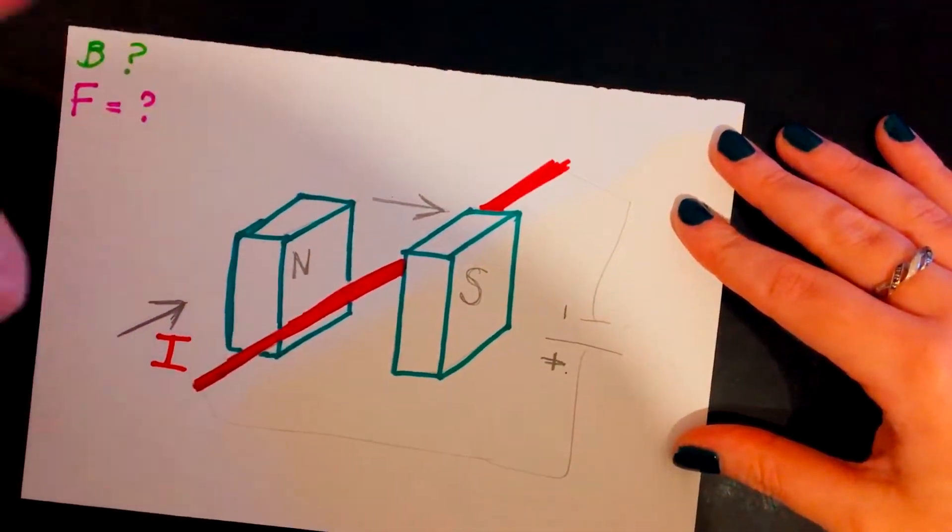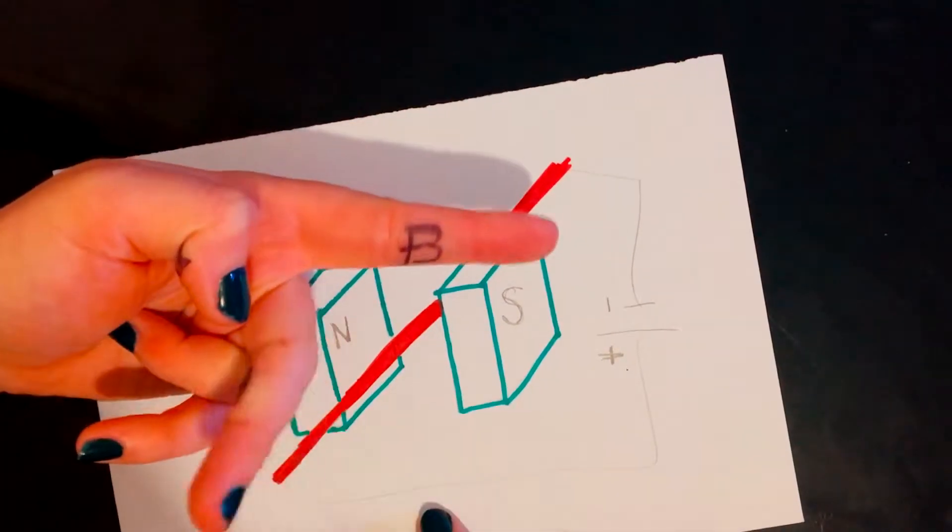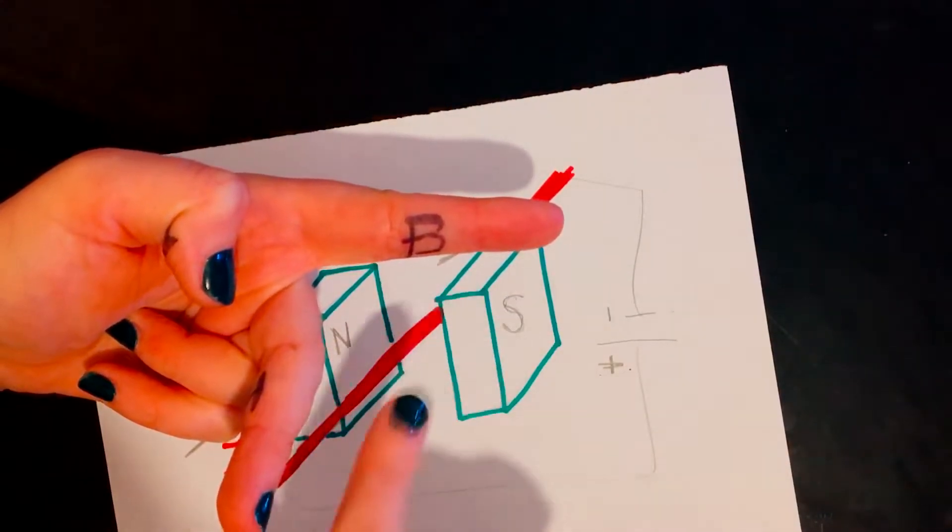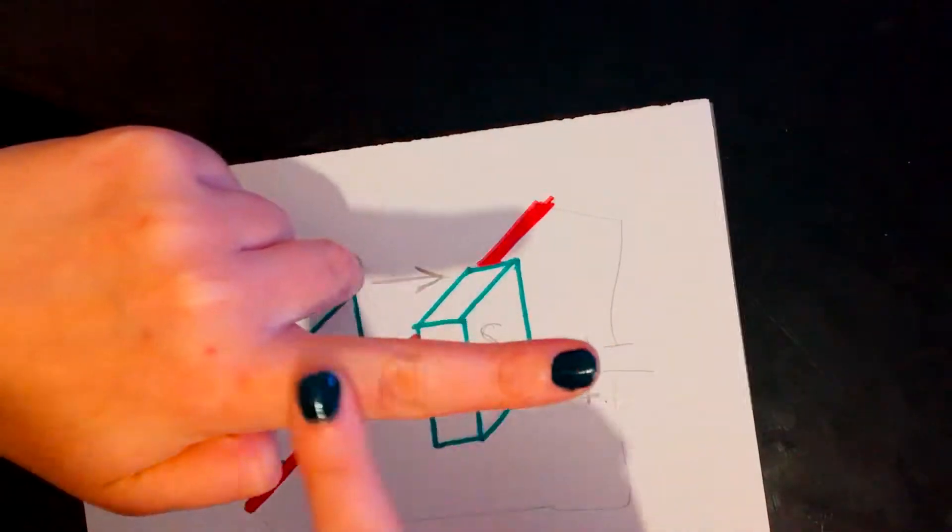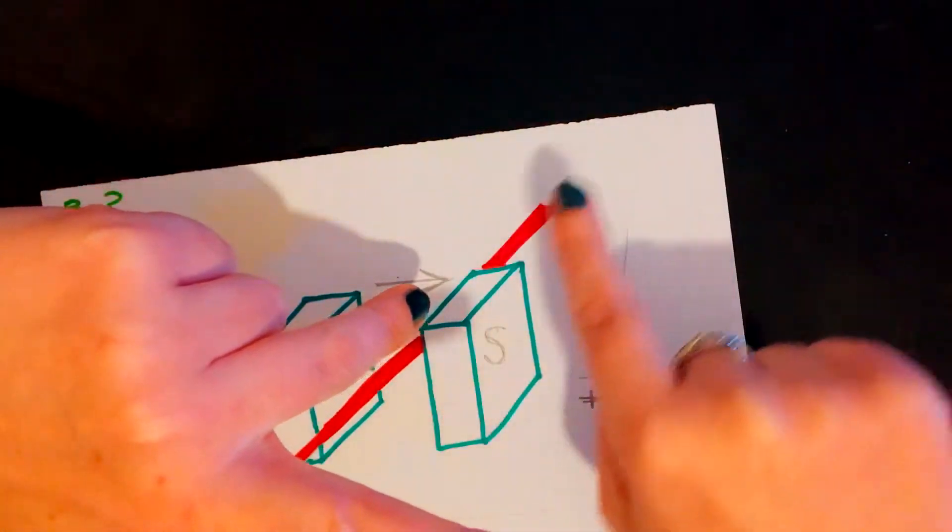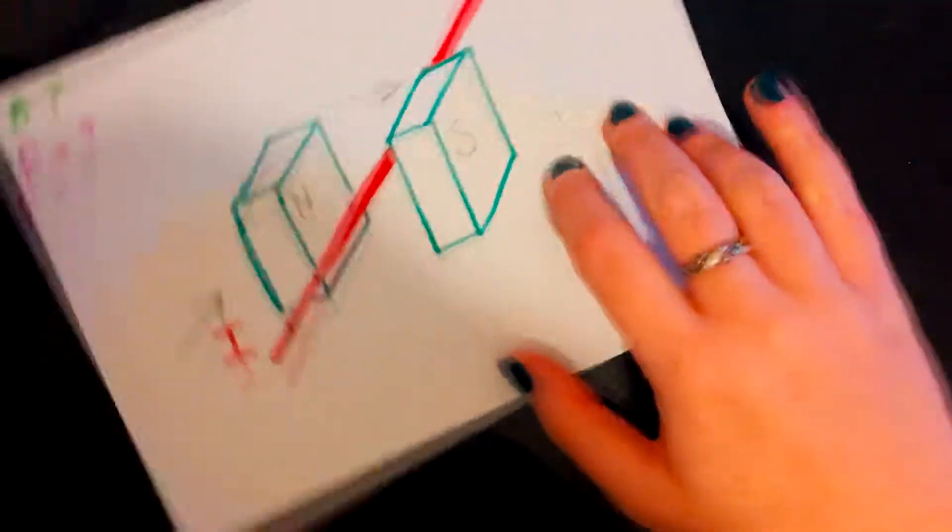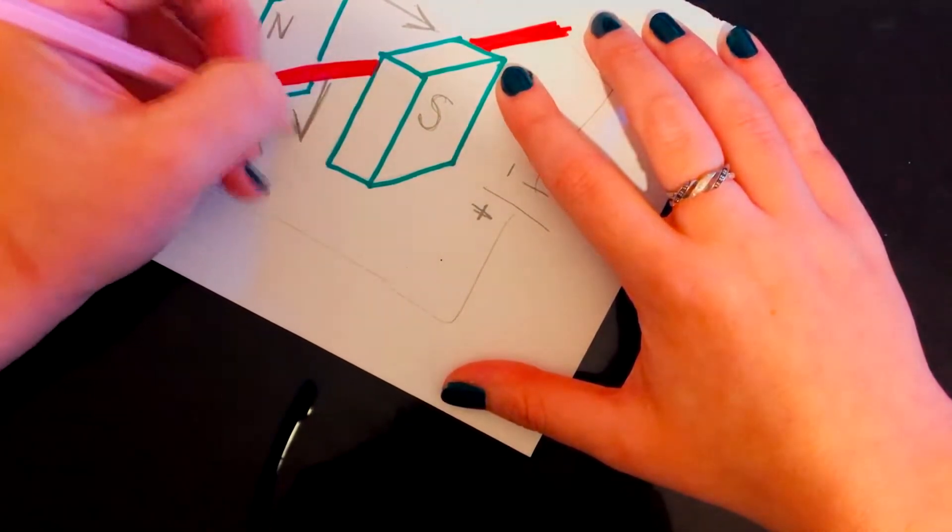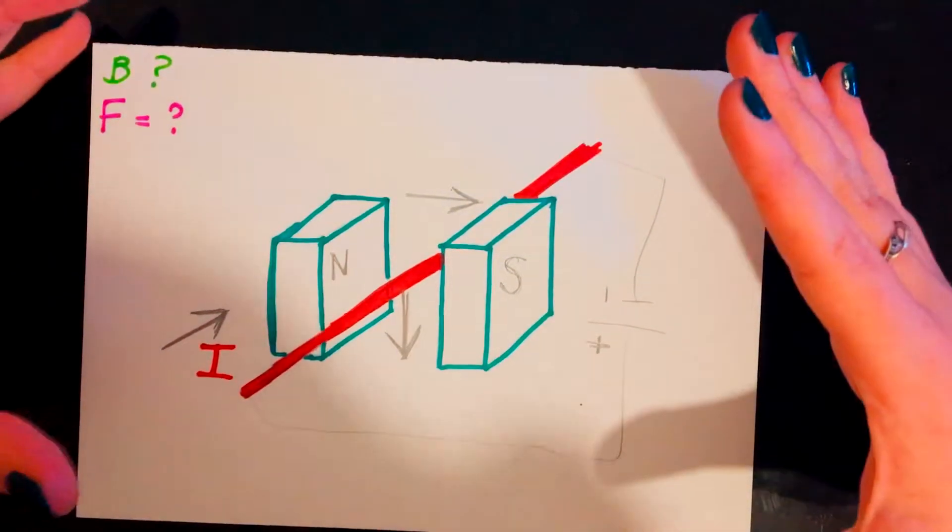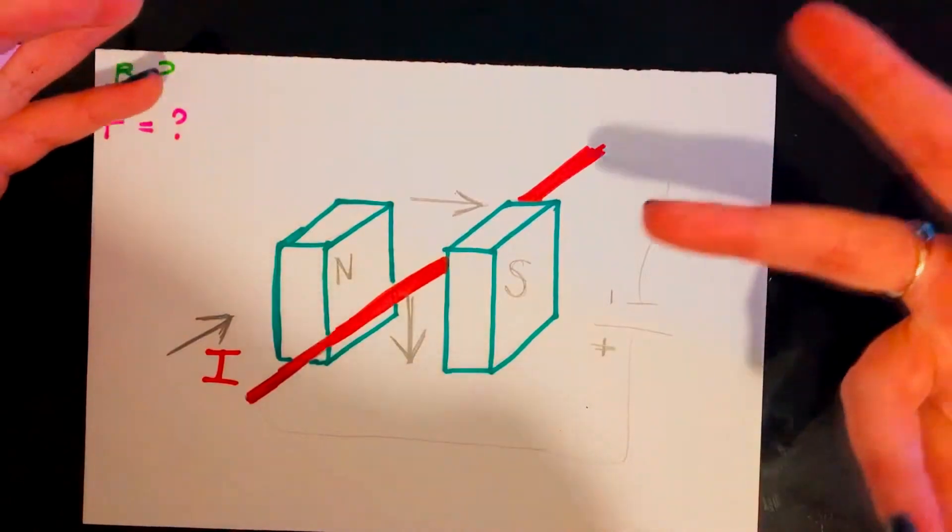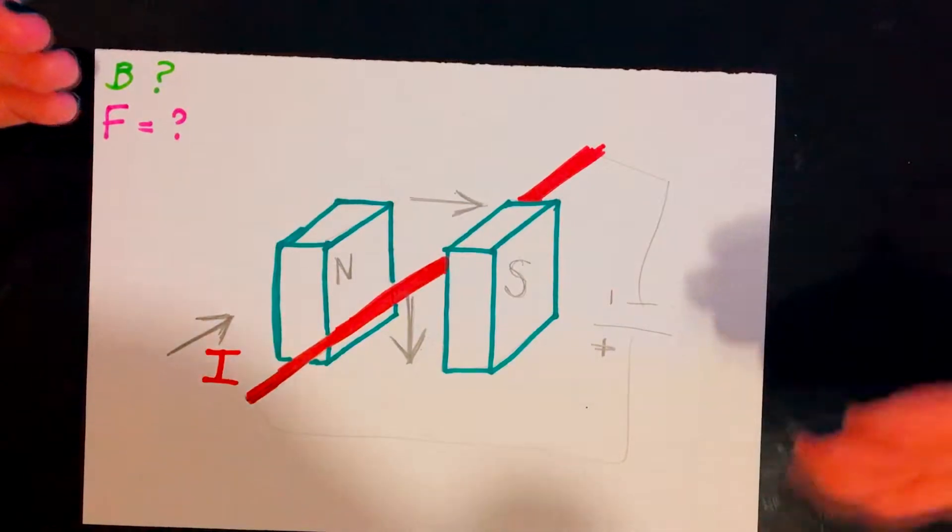I know my first finger is my field, so it's going to be going that way. Second finger is my current, now I know my current is going this way into the page, so I'd have to do that. My field is still going from north to south, but now my current is going into the page, which means my force is going to be going down. So my wire would currently experience a force in this direction. We can use this scenario to find out which direction our wire is going to try and have some movement due to the force that is caused by being exposed to a different magnetic field.